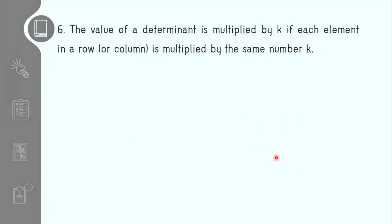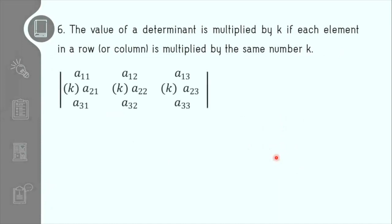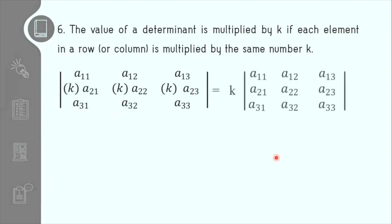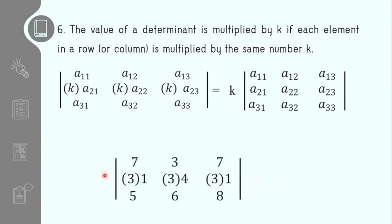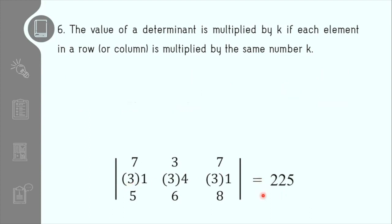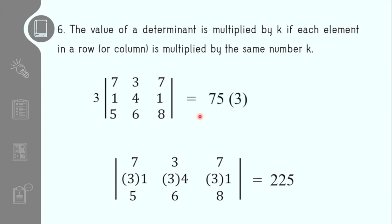Theorem number 6 states that if we have an integer k and we multiply it by any row or column, the determinant is equal to k times its original determinant. For example, the value of k here is 3 and we multiply it by the second row. Therefore, the determinant equals 225, which is also equal to 3 times the original determinant. The original determinant is 75, so 75 times 3 equals 225.